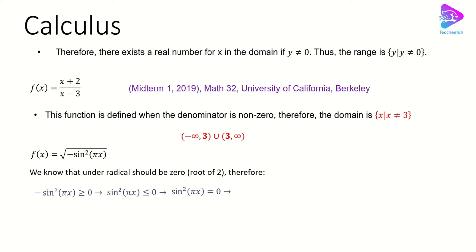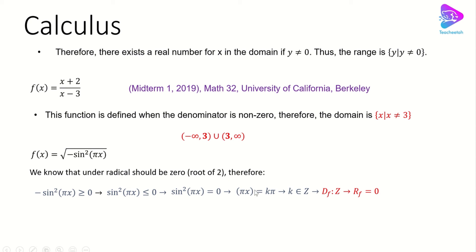From the definition, whenever we have an integer number times π instead of πx, this equation is going to be zero. Therefore πx = kπ is the answer to this equation. So if you plug in any value like 1π, 2π, 3π, 0π, or negative 1π, negative 2π, it gives us a zero value, and therefore the expression inside the square root is zero.